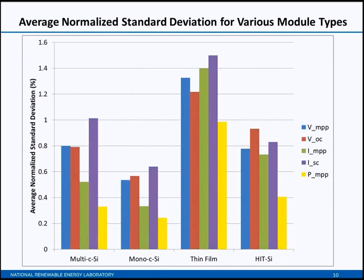A number of the databases have additional data items that could be compared in future work. Comparing the module areas would be of interest for some of the models, as well as the number of cells in the module, the number of cells in series, and perhaps even efficiency. But just looking at these at a high level, without doing the same statistics we did on the four variables highlighted in red, we didn't see a significant variation between the databases for these other variables.